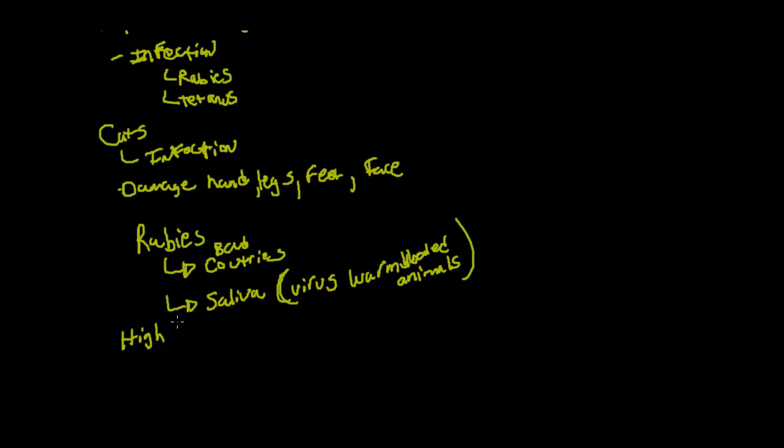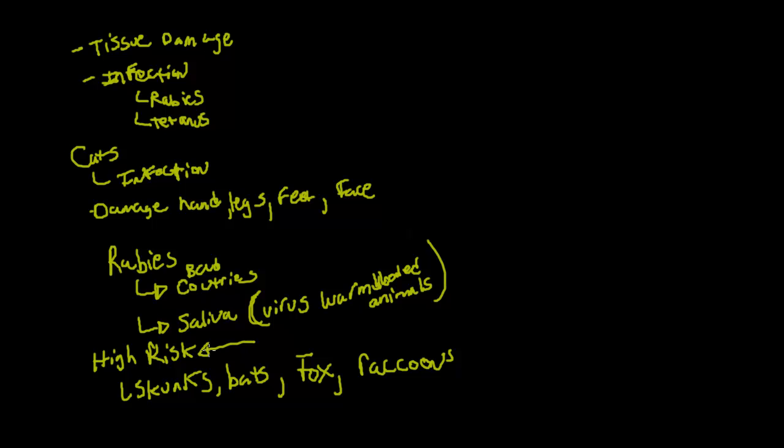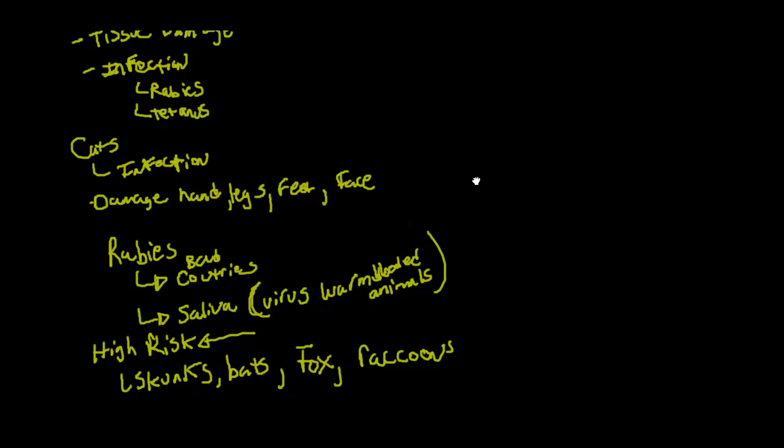You have a high-risk group of animals that carry this that you want to avoid: skunks, bats, fox, raccoons. But you still need to worry about it even from dogs and cats, especially if they're wild. If it's an unprovoked attack, you still want to worry about rabies, or any type of bite if you don't know the animal.